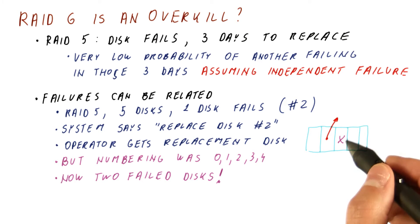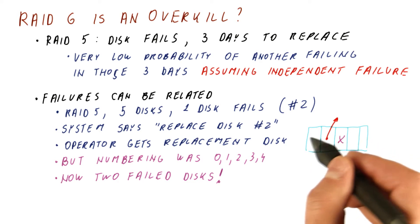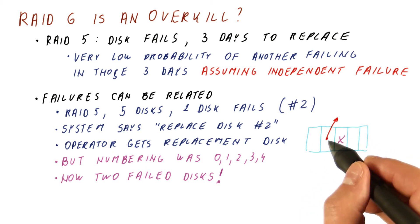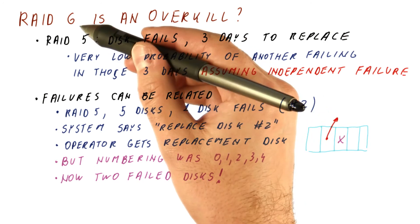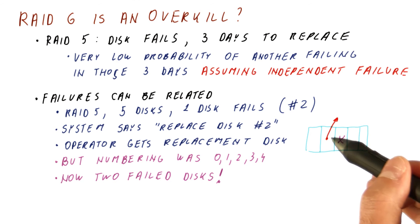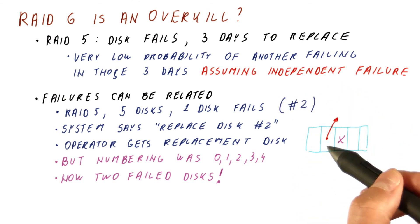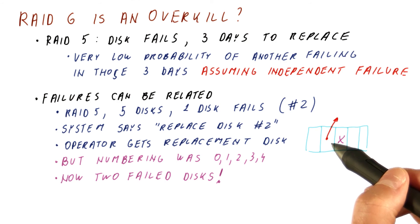Pretty much when a disk fails, the actions to repair it create a lot more risk for the other disks and may cause a second failure. That's where you want to have RAID 6. When one disk fails and you're trying to repair it, if another one fails for any reason — independent or dependent on the first failure — you are still safe.